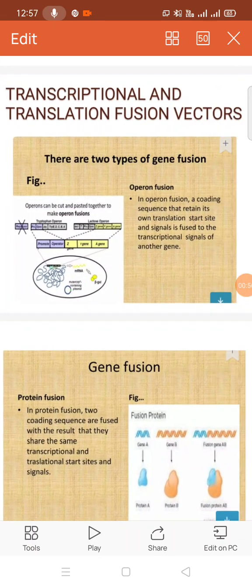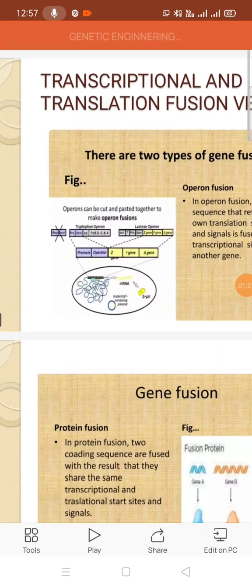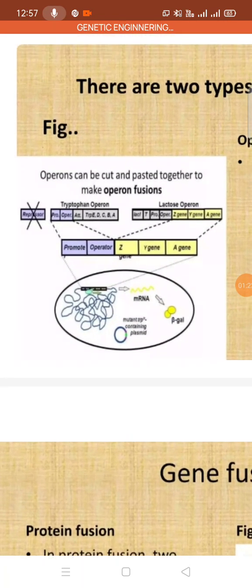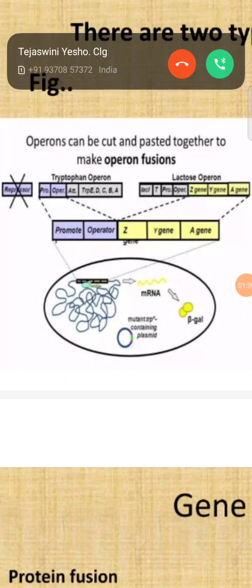Fusion vectors are also known as operon fusion. Operon fusion and protein fusion are types of fusion vectors. In operon fusion, a coding sequence retains its own translation start site and signal, which is fused to the transcriptional signal of another gene. An operon can be cut and joined together to make an operon fusion, with both the tryptophan operon and lactose operon involved.